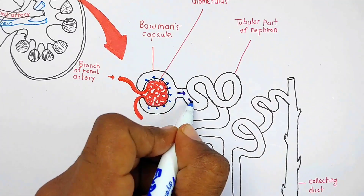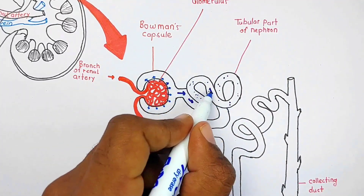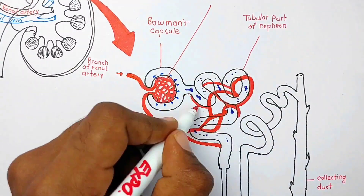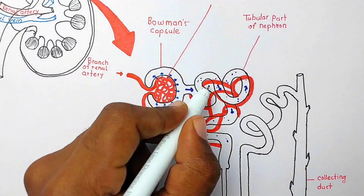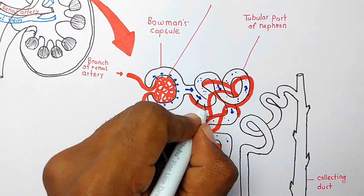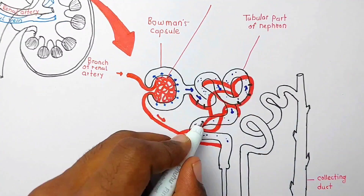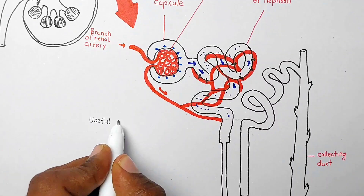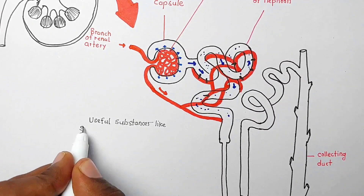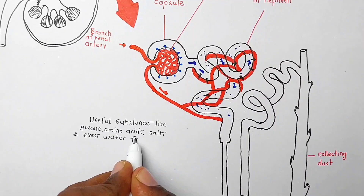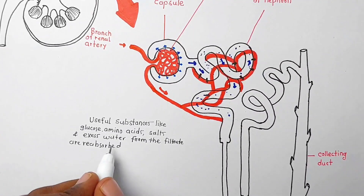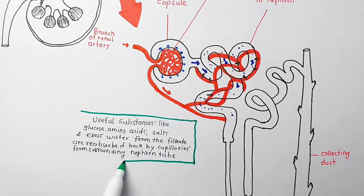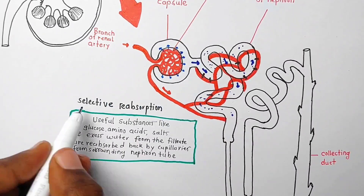This glomerular filtrate then passes through the tubular part of the nephron, which is surrounded by blood capillaries. From the first part of the nephron tube, useful substances are reabsorbed back into the blood capillaries. Useful substances like glucose, amino acids, salts, and some water from the filtrate are reabsorbed by the surrounding capillaries. This is the second step of urine formation, called selective reabsorption.